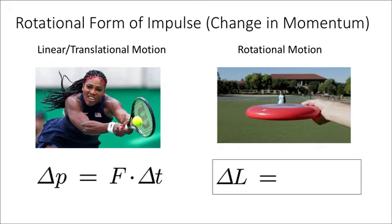So in the case of Serena Williams hitting a tennis ball with her tennis racket, Serena Williams was able to change the momentum of that tennis ball by applying a force f with her racket to it for a small period of time.